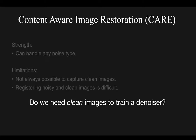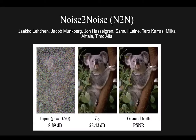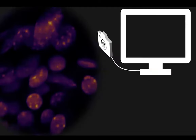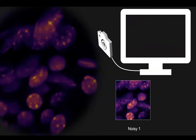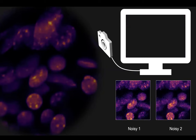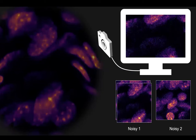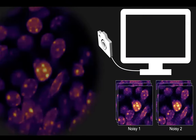The first of these limitations led researchers to ask: do we actually need clean images to train a denoiser? One response came from the developers of Noise2Noise, who made the surprising observation that clean targets are not necessary — with enough training data, noisy targets can work just as well. The training data collection starts the same as CARE by capturing a low signal-to-noise ratio image. Then, keeping the sample fixed and the brightness low, you capture another image of the same area — a second noisy image with the same underlying clean signal but different random noise. You repeat this to build up a paired dataset of noisy images.